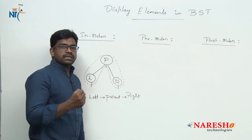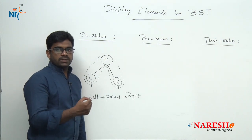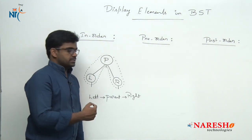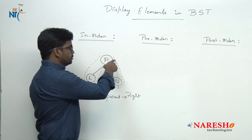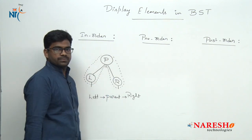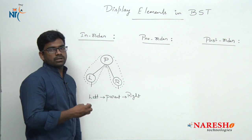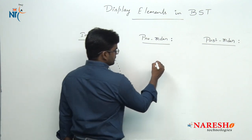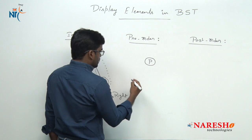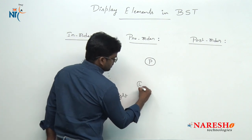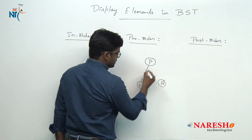Whenever we display elements of a binary search tree using in-order traversal, we traverse in this way: left, then parent, then right. Now for pre-order traversal, we have the parent, the left child, and the right child.